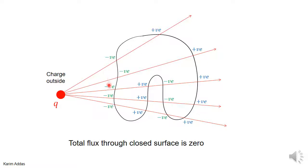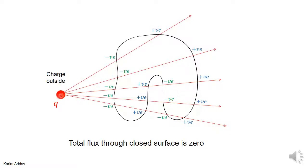Even if you try to make a clever surface — say you make a surface with a curve — that won't make it different at all. Because if you follow the electric field line, it goes in with a negative contribution, because the area points from inside to outside. When it goes out, positive contribution. If it goes in again, negative contribution. Goes out, positive contribution. The total is zero. So it doesn't matter what shape you make the surface — as long as the charge is outside, the total contribution is zero.